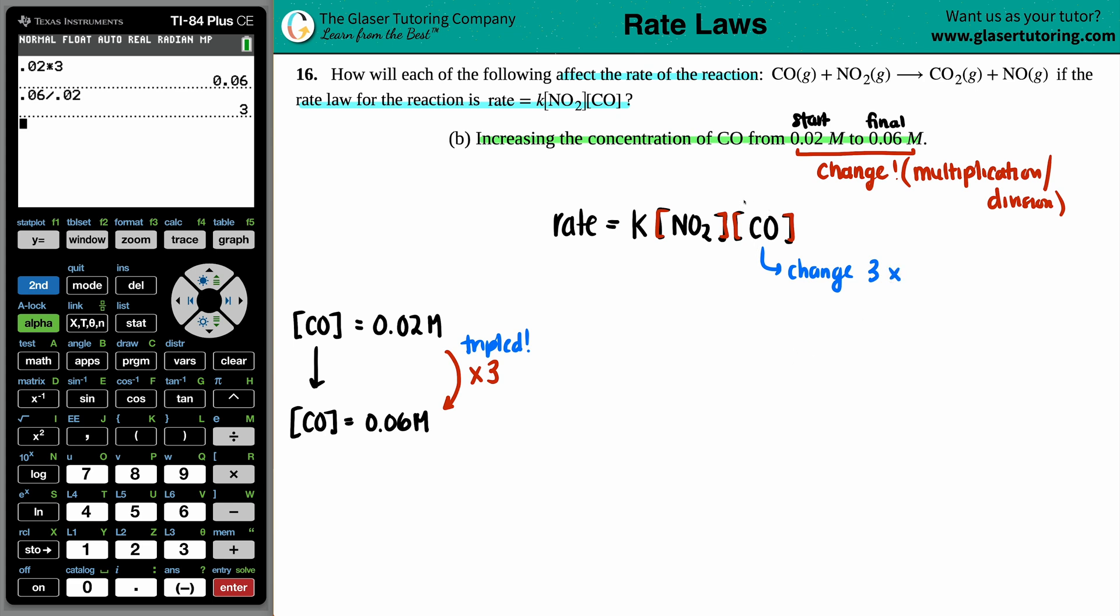So we know that my change for the CO is going up by three times. And if you are inputting change values, not actual molarity, but if you're inputting your change values, that means that you're going to get a change out for your reaction rate. And that's totally fine, because we don't know what the starting rate was, and we don't know what the initial rate is. All we know or that we can find out is how much the rate is going to change.